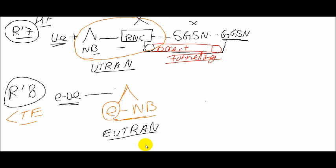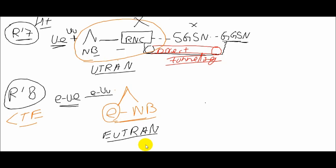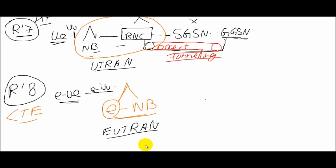And here in the interface of UE and NodeB, we used to call it the UU interface in 3G. Now it's evolved, so we start calling it as eUU interface. Learning 3G and LTE is like most things you can still compare, so it makes it easy for us to learn. eUU is the interface between eUE, the mobile, and the eNodeB.